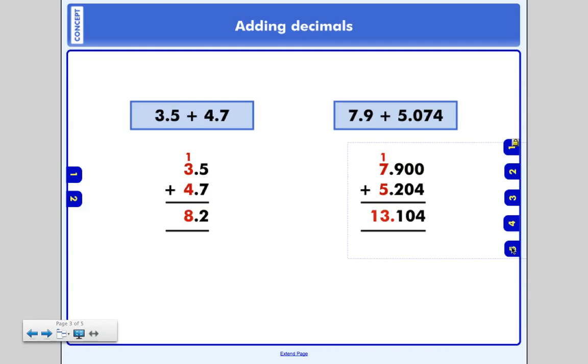Step 4, I want to make sure I've got my decimal point where I need it. Drop it straight down. Excellent. So we got an answer of 13 and 104 thousandths. Does that answer make sense? We estimated 8 plus 5 is 13. Well, sure. This is definitely in the right ballpark.